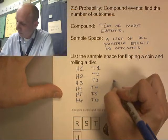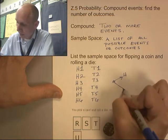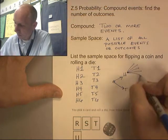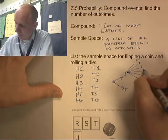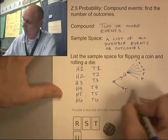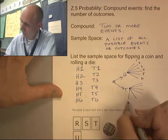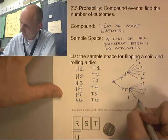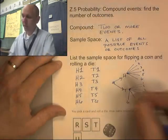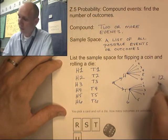You might also see it like this — a tree diagram. It could go to heads or tails, and then off of each branch: one, two, three, four, five, six. Heads branches off into one through six, and tails branches into one through six. Two different ways to visualize the sample space. Any way I look at this, I have 12 events.